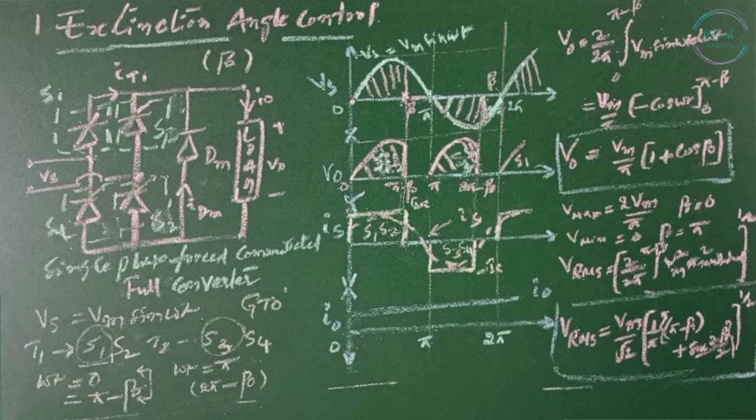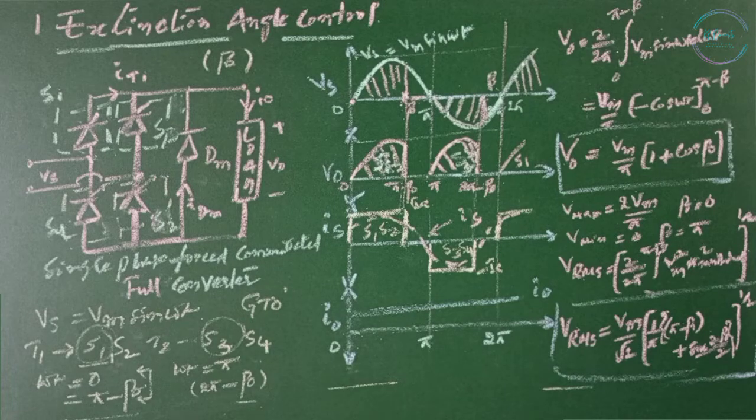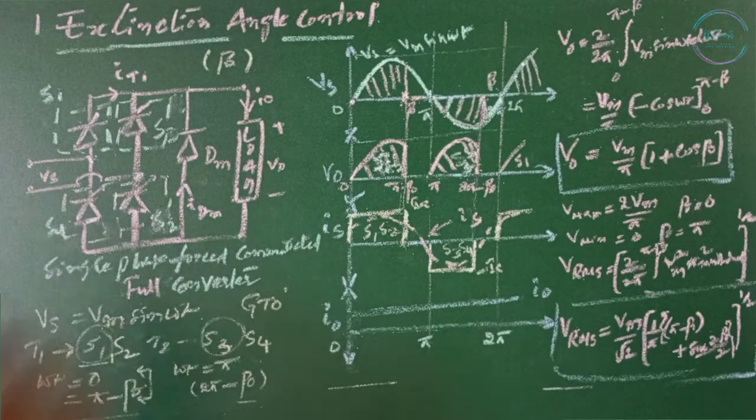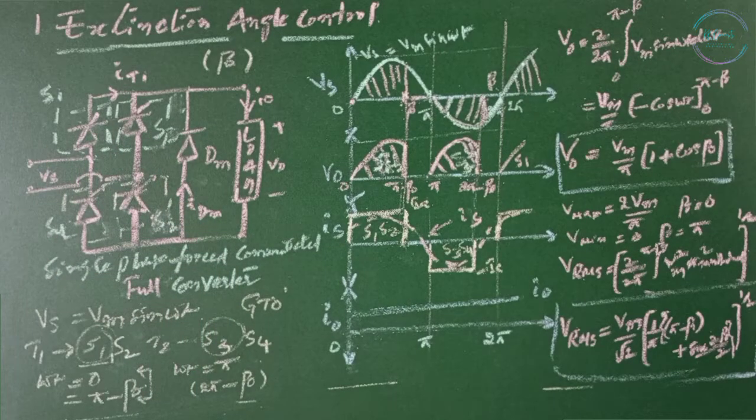The single phase force commutated full converter circuit is shown. The thyristors are replaced with switches. Switches are nothing but GTOs: S1, S2, S3, and S4. Each switch conducts for 180 degrees.